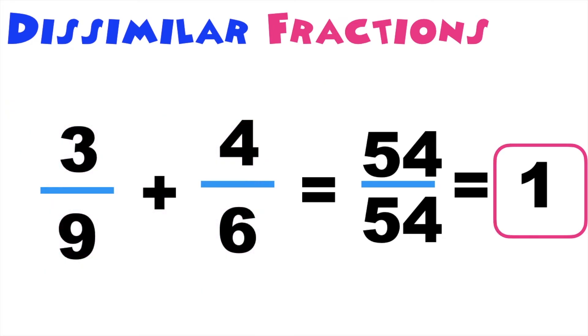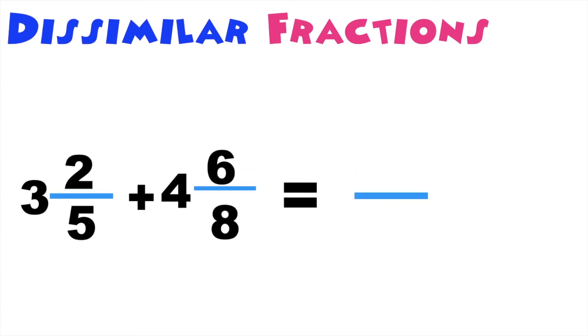Let's have the next number. 3 and 2 fifths plus 4 and 6 eighths. Since we have mixed numbers here, let's add first the whole numbers. 3 plus 4 is equal to 7.